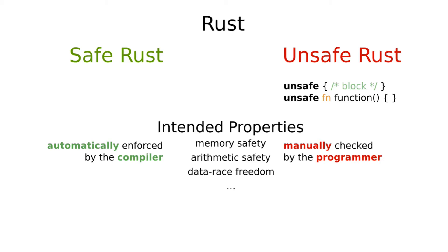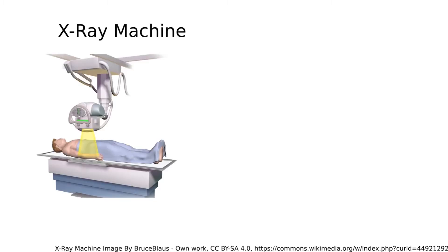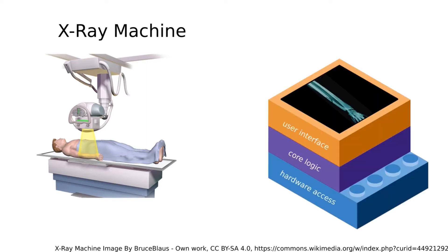Why do we need the additional power of unsafe Rust? Let's have a look at an example. Imagine you want to build an X-ray machine. Most of it can be built from regular components like plastic pieces and cables. Similarly, most of its software, such as a user interface, can be written in a memory-safe high-level language such as Java or Python.